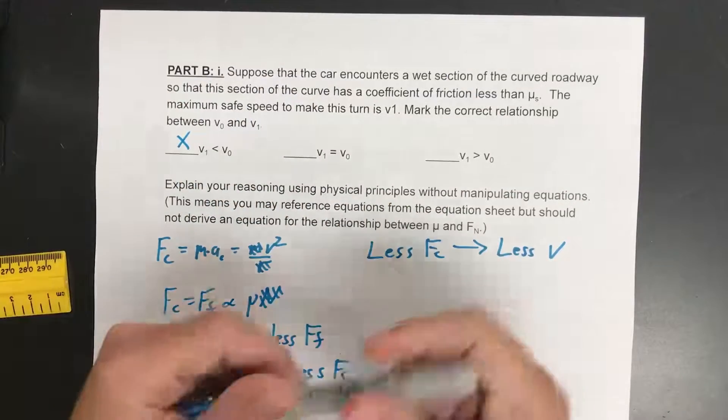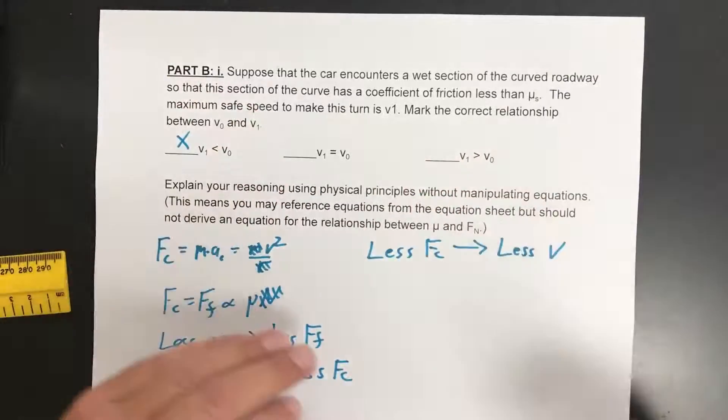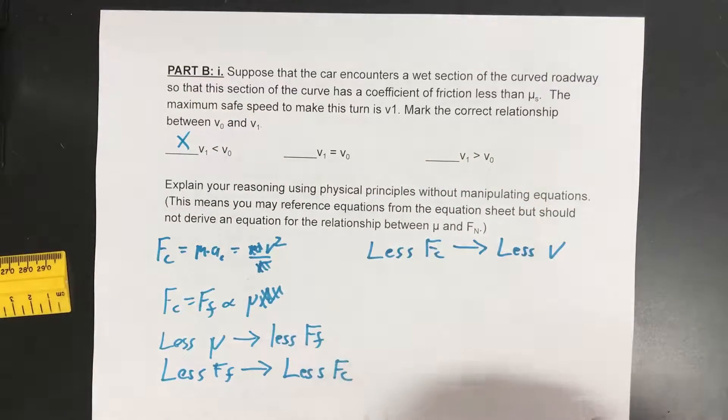And I think you actually have an intuitive sense of that. If there was less friction on the roadway you're not going to be able to turn in tight of a circle. So then they say, get to this part.